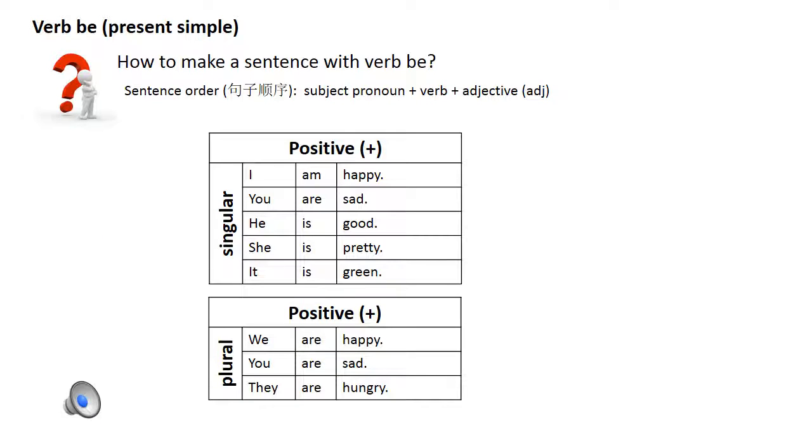You can also use verb be with an adjective. Example: I am happy, you are sad, he is good, she is pretty, it is green.